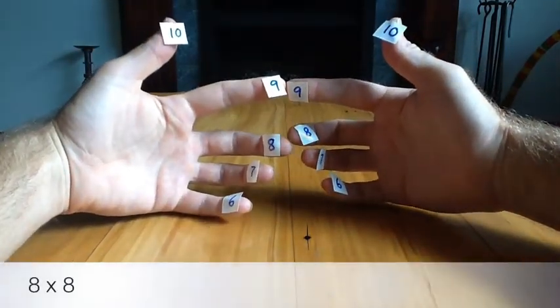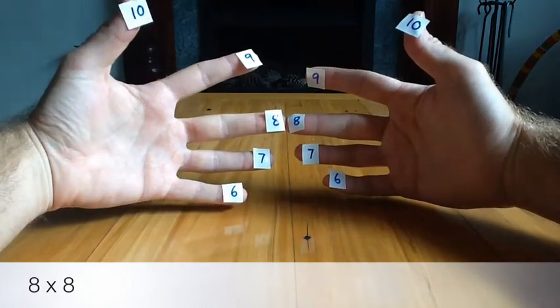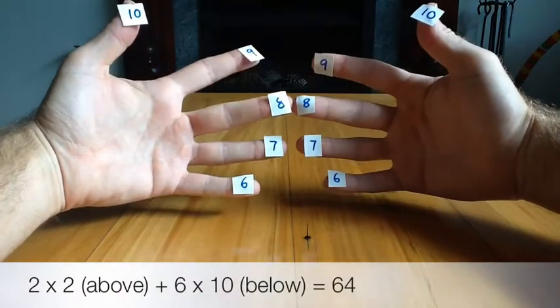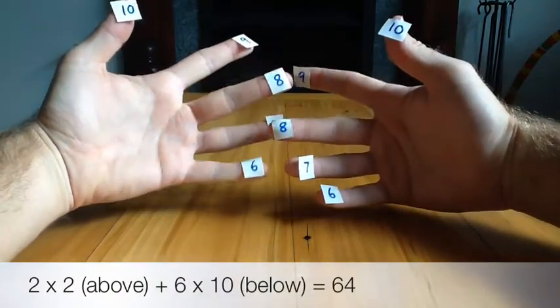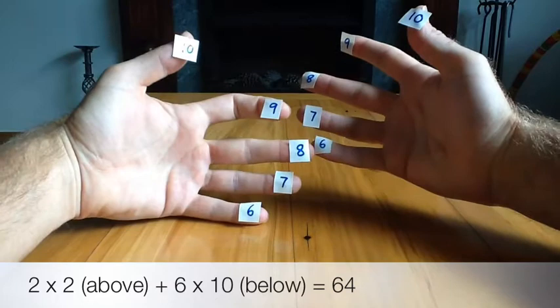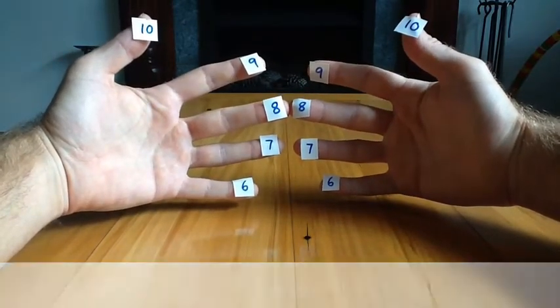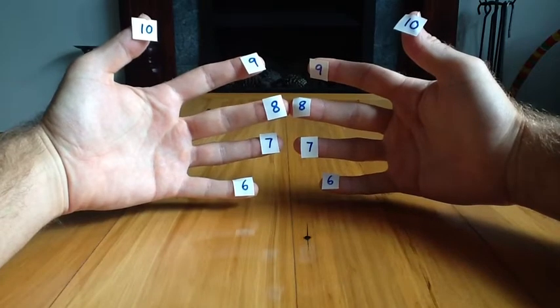Let's try 8 times 8. We've got multiplying 2 by 2 is 4 and we have 1, 2, 3, 4, 5, 6, 10s. So we have 64, 8 times 8 is 64.